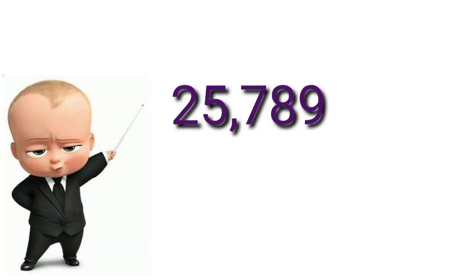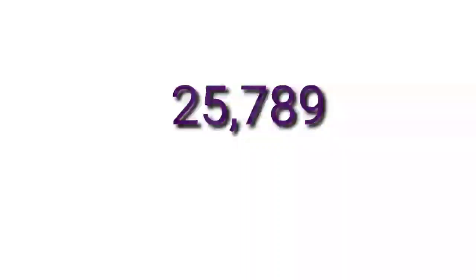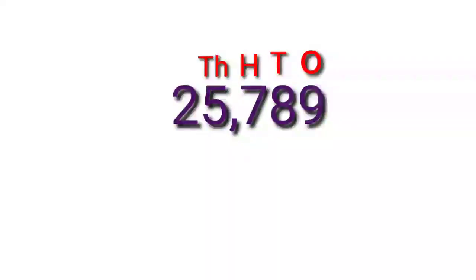So we write the places over the digits and start from the ones place. Nine is in the ones place, then tens, then hundreds, then thousands, then ten thousands. Ten thousands is denoted as TTH. So what is the number name? Let's find out.